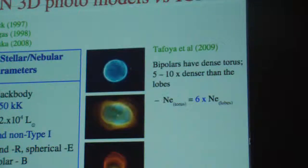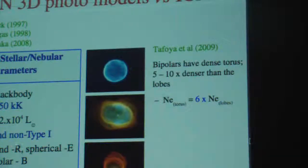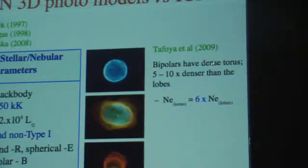What we use here as input parameters — from a number of papers — is: so far only blackbody stellar spectra, a range of stellar temperatures, stellar luminosity from 1,000 to 20,000 solar luminosities, two groups of abundance like Type 1 and non-Type 1, spherical and bipolar morphology, and so far only constant density — with the exception of bipolar cases, which require higher density for the waist region.